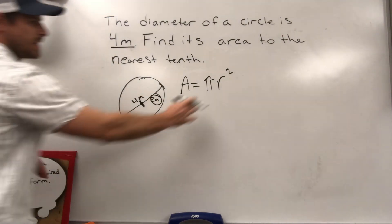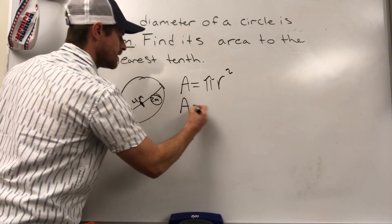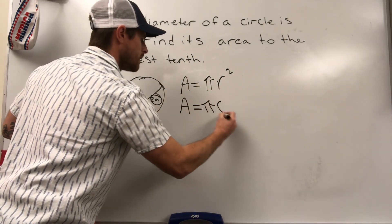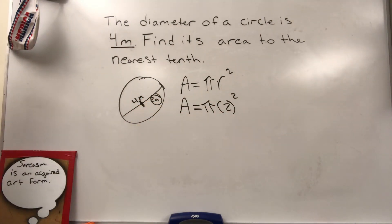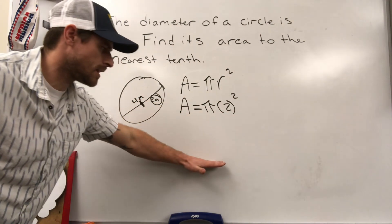So two meters is our radius. Now we can substitute that in to our formula. Plug the two in for the radius. That's all we need to do here. And then we just need to work it out. We're going to get an answer down at the end.